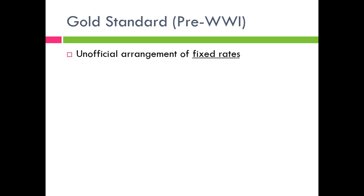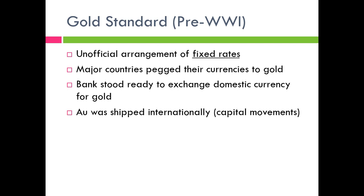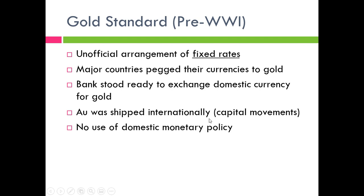The gold standard was an unofficial arrangement of fixed rates — there was no gold board, no government organizing it. Britain and other large countries linked their currencies to gold, and then other countries followed suit. The central bank would actually exchange domestic currency for gold; for example, $20.67 was one ounce of gold. There were also free capital movements — gold was shipped internationally. So there were two of the three: fixed exchange rate and international capital movement, but no domestic monetary policy. It wasn't even thought of back then. This was before World War I, in the late 1800s and early 1900s, when central banks had no interest or intention of targeting unemployment.